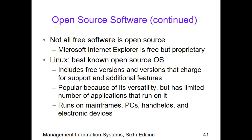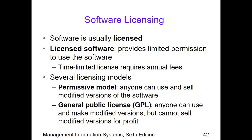Microsoft Internet Explorer is free but it is proprietary, because only the license or the right to use it is purchased. Linux is the best-known open source OS — it has free versions and is versatile, but has a limited number of applications and can run on many devices. For software, it is usually licensed and permission is limited. If you would like to renew, renewal fees must be paid. There are two licensing models: a permissive model, where anyone can use and sell modified versions of the software; and the GPL, where anyone can use and make modified versions but cannot sell modified versions for profit.